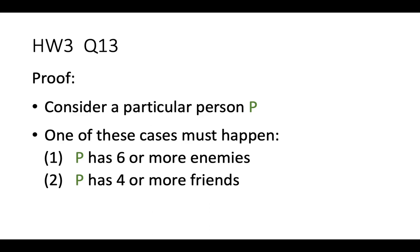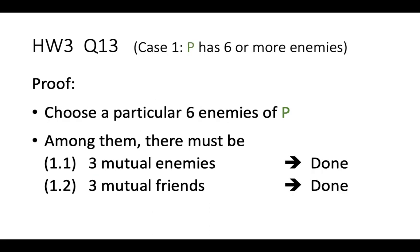In Case 1, P has six or more enemies. Let's find six enemies of P — any six of them. By the classroom result, among these six enemies there must be three mutual friends or three mutual enemies. If we find three mutual friends, we are done. On the other hand, if among the six enemies we find three mutual enemies, then those three people together with P form four mutual enemies. So we are also done.